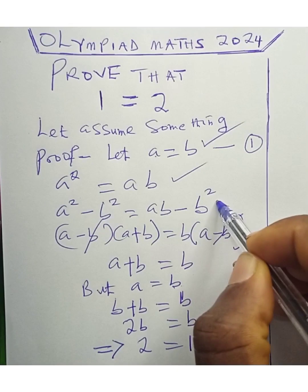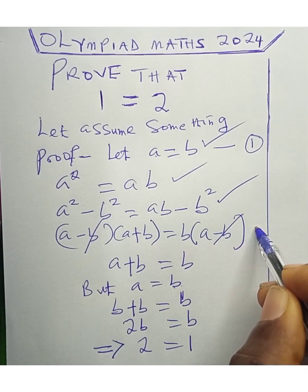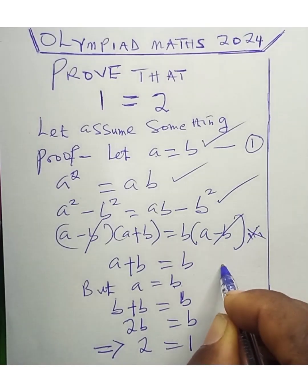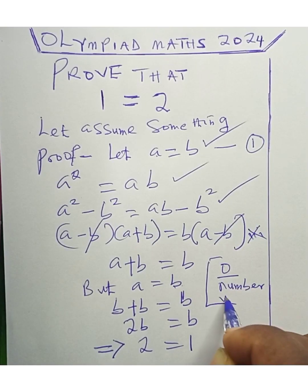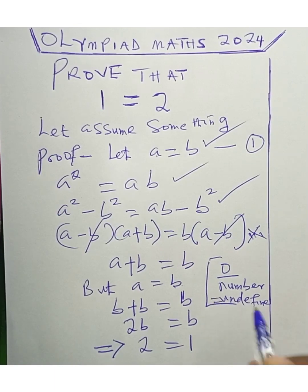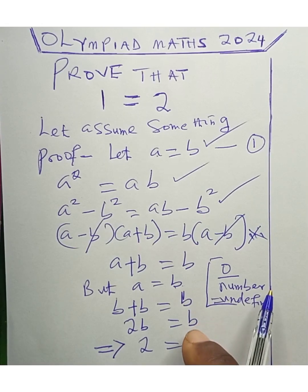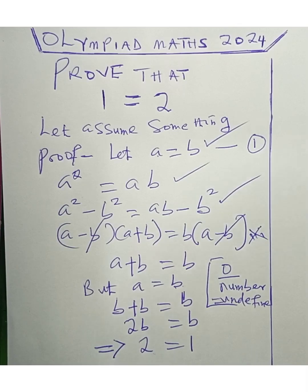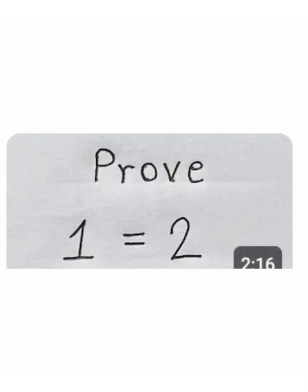Dividing by (a minus b) is the mistake. Since a equals b, (a minus b) equals zero, and dividing anything by zero is undefined. This leads to an ambiguous solution where 2 equals 1. So be very careful not to make this kind of mistake — you cannot divide by zero.